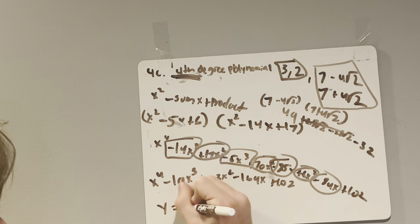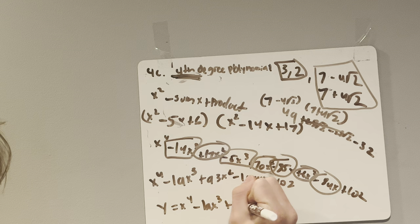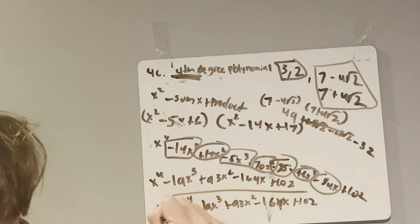So our final answer is y equals x to the fourth minus 19x cubed plus 93x squared minus 169x plus 102. And that is our final fourth degree polynomial.